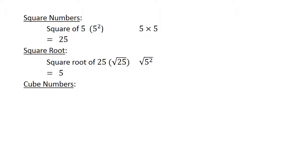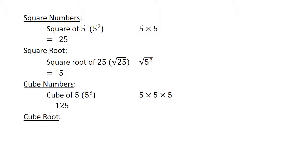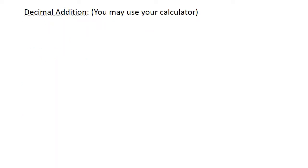Cube numbers. The cube of five equals one hundred and twenty-five. And the cube root of one hundred and twenty-five equals five.